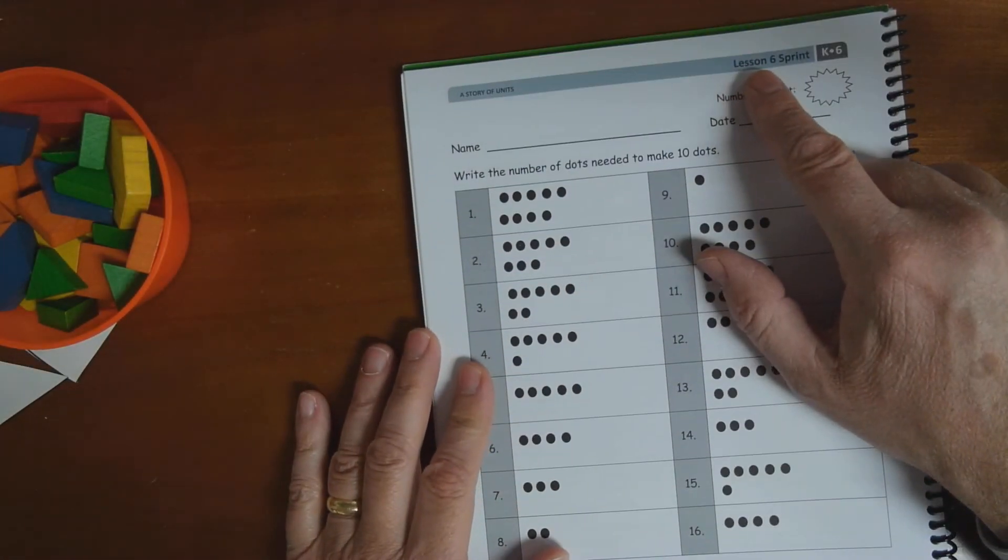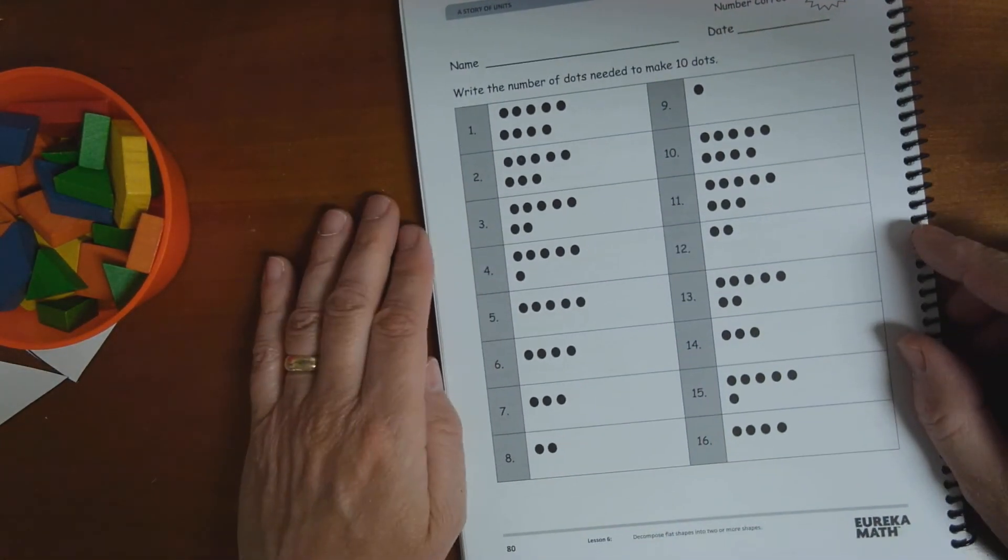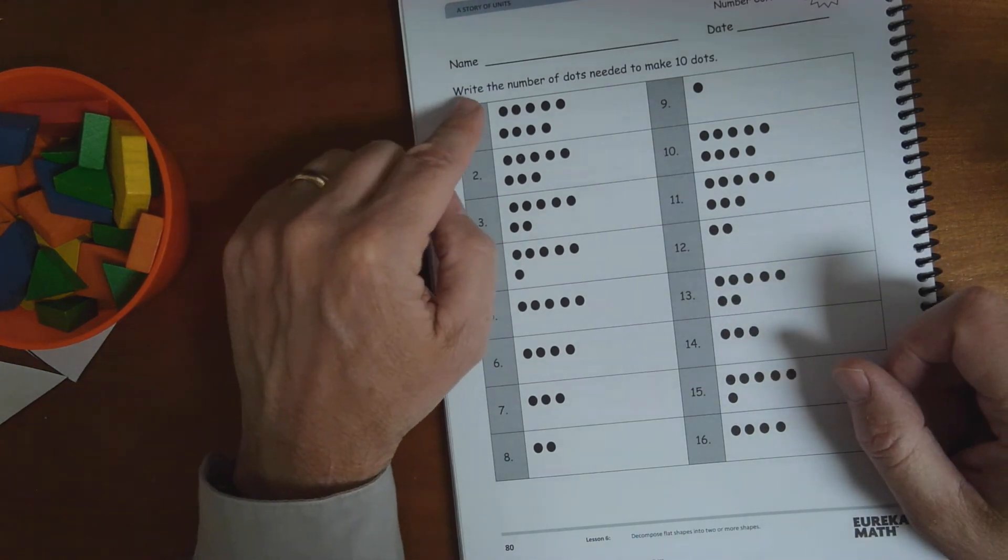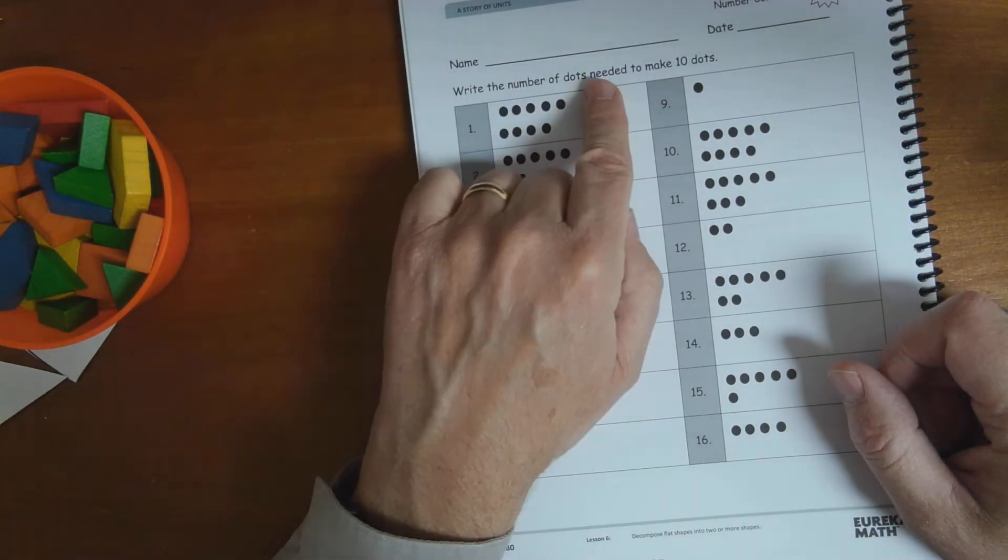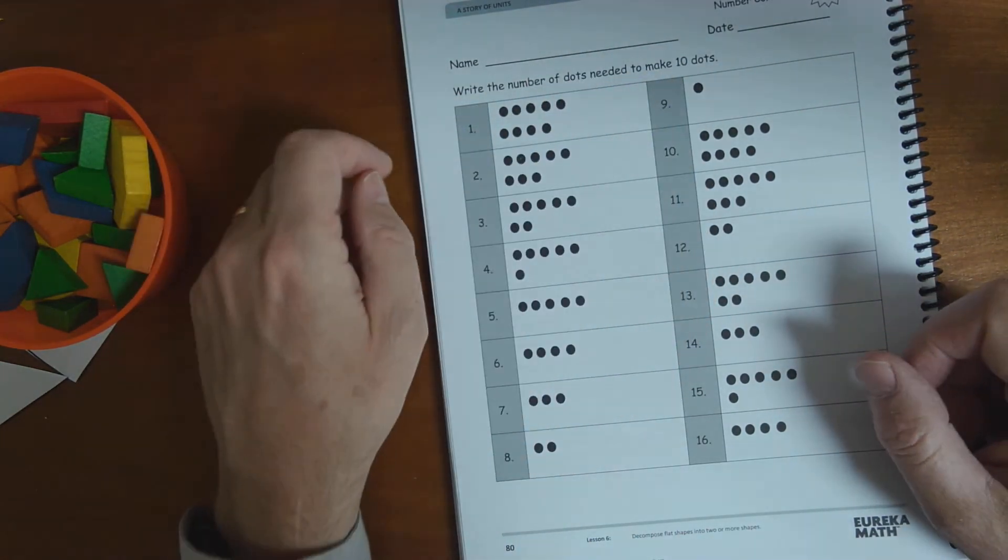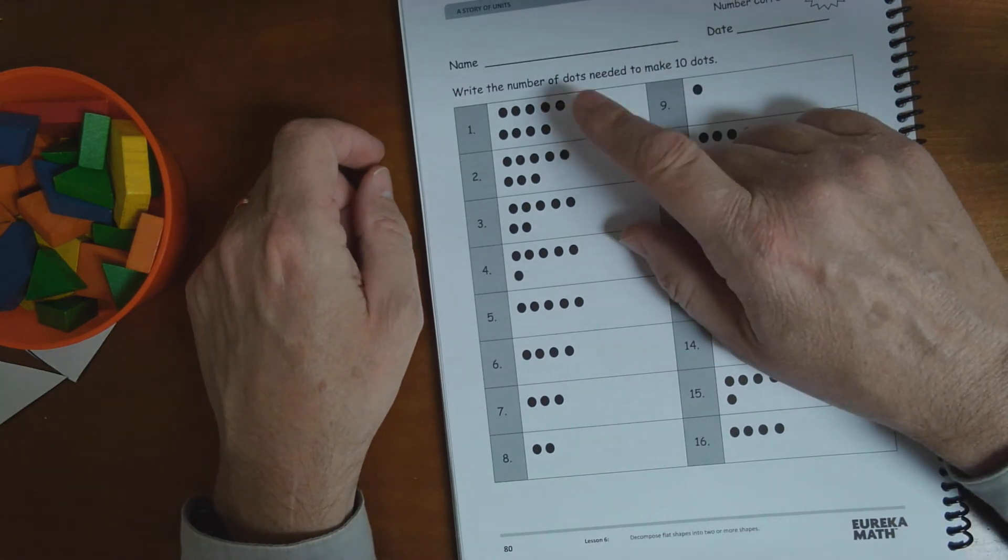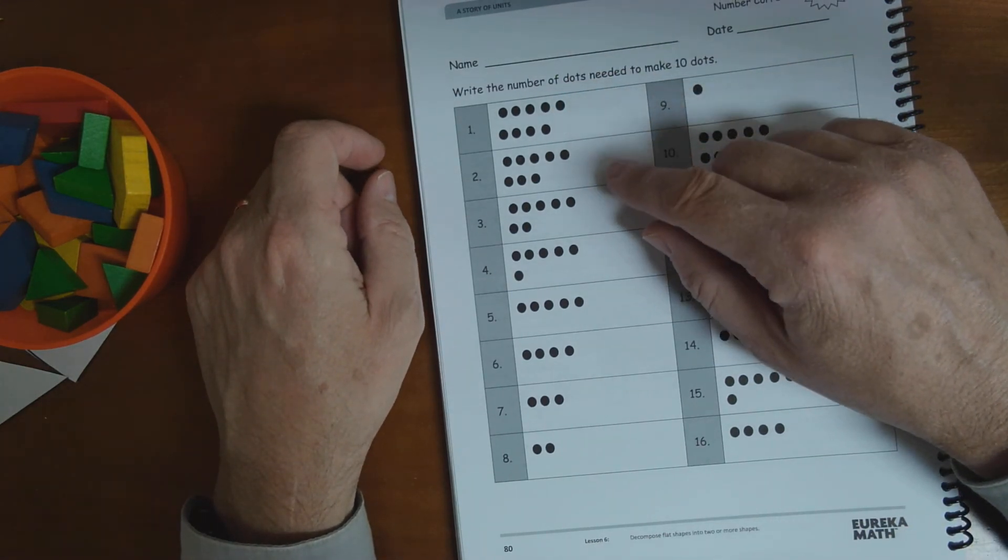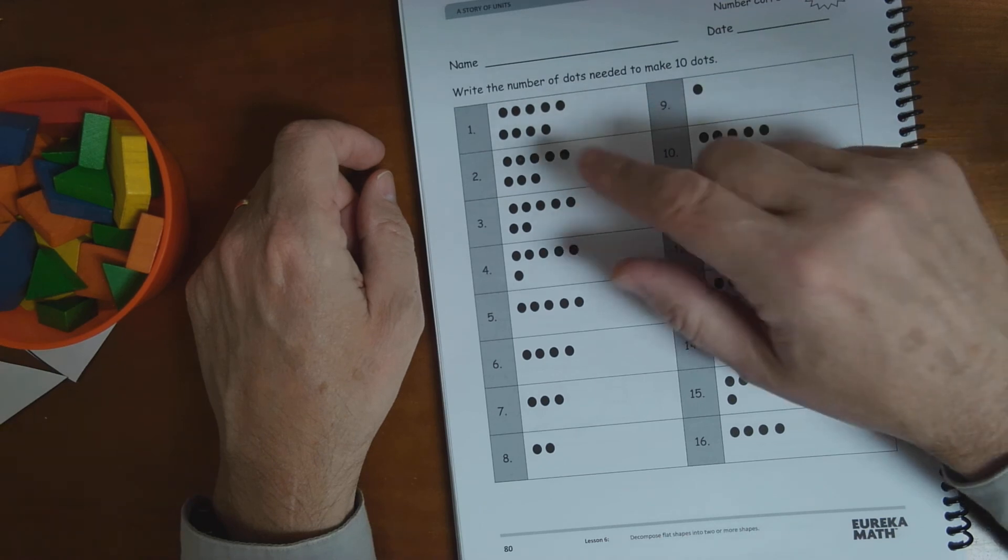And then one other thing I want you to do today, and that's the lesson six sprint. See how fast you can finish these. It says, write the number of dots needed to make 10 dots. Now they don't want you to make the dots. They just want you to write which number, how many more dots.